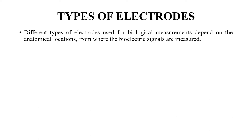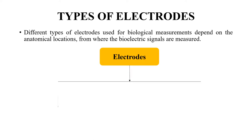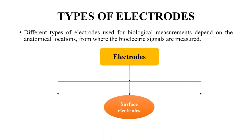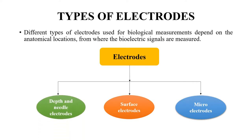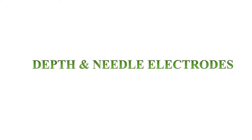Based on the anatomical location, we can use different types of electrodes for measuring bioelectric signals. The types of electrodes are: first, surface electrodes; then microelectrodes; and then depth and needle electrodes. Today we are going to discuss depth and needle electrodes in detail.